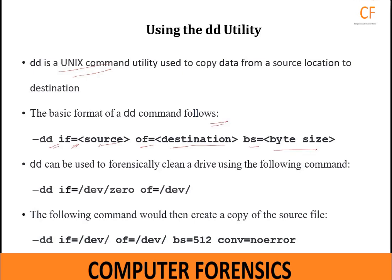IF is short for input file and OF is short for output file. The byte size is often set at 512 bytes, but varies according to the file system you are working with and how quickly you want to copy the source data. The user can also verify images with the MD5 algorithm, and images can be sourced from a specific computer on a network and sent to a network location. As noted earlier, the destination drive should be sanitized before acquiring evidence. To forensically clean a drive, use the command: DD IF=/dev/zero OF=/dev/[device].